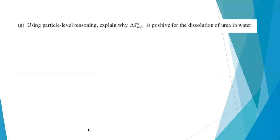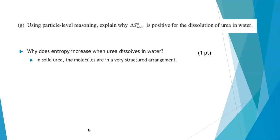Using particle-level reasoning, explain why the change in entropy for this process is positive. This was scored out of one point as well. The question is really asking, why does the entropy increase when urea dissolves in water? Well, in solid urea, the molecules are in a very structured, ordered arrangement. They're in a solid. They're all very close together, very close packed. That's a very low entropy situation. So on a particle-level model, you might think of it being something like this.